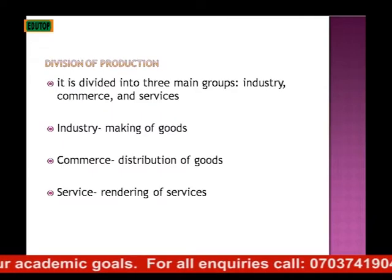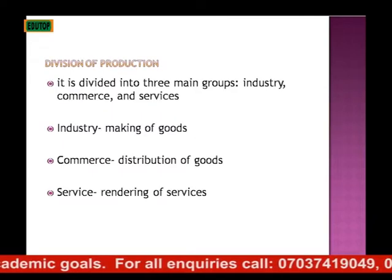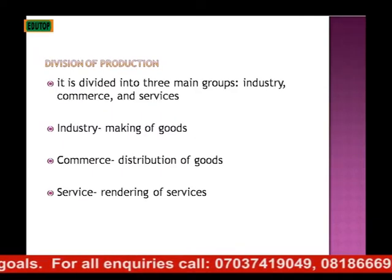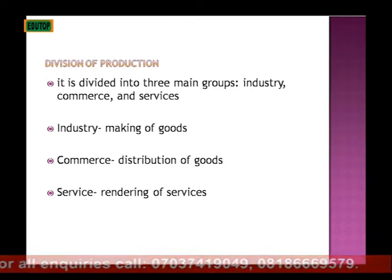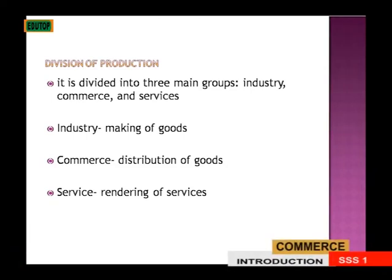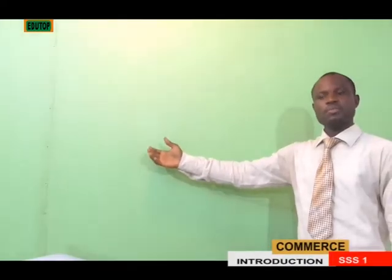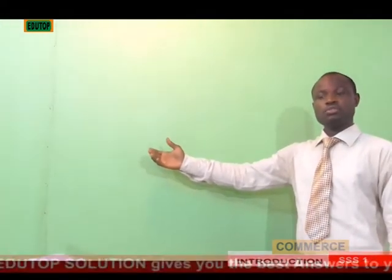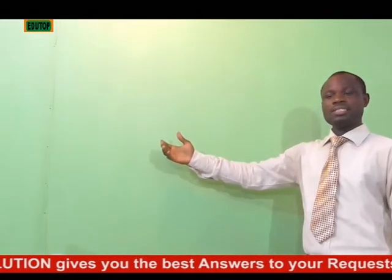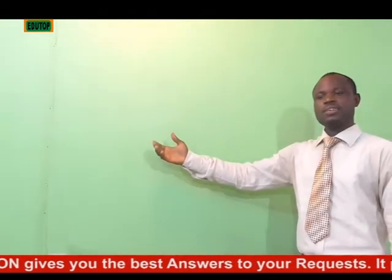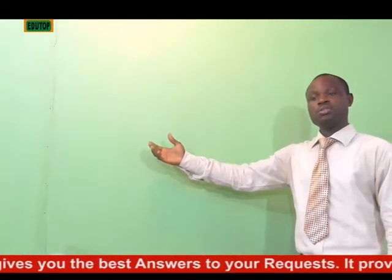Division of production: it is divided into three main groups — industry, commerce, and services. Industry involves making of goods. Commerce refers to distribution of goods, while service refers to rendering of services.